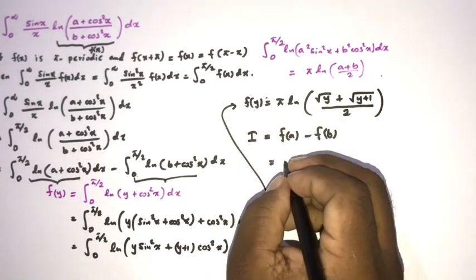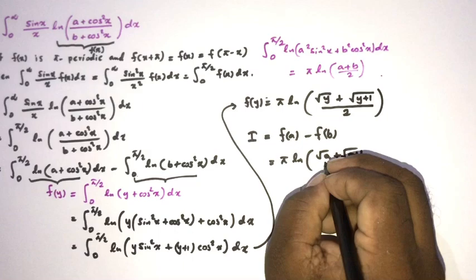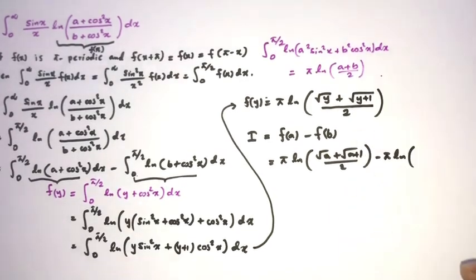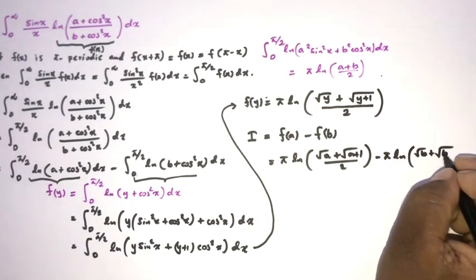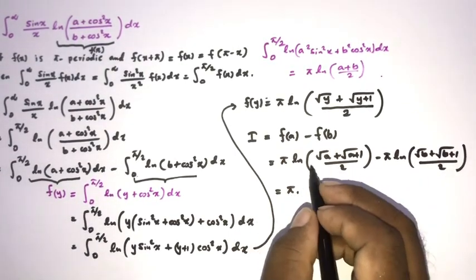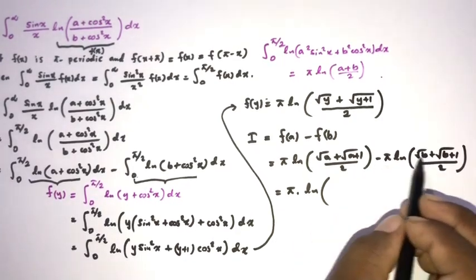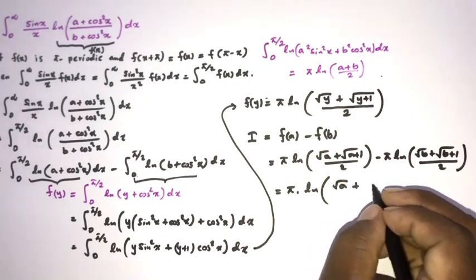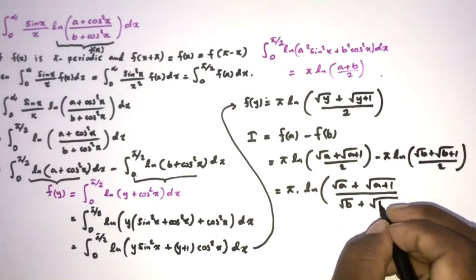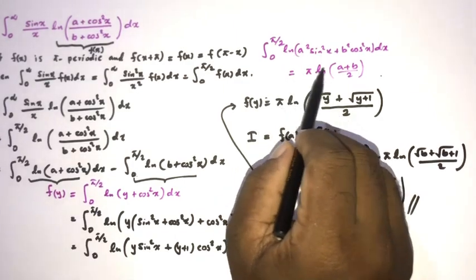So f(a) equals pi times ln((√a + √(a+1))/2), and f(b) equals pi times ln((√b + √(b+1))/2). Since pi is a common factor and using the property of logarithms, we get: I = pi times ln((√a + √(a+1))/(√b + √(b+1))). The factors of 2 cancel, giving us our final answer.